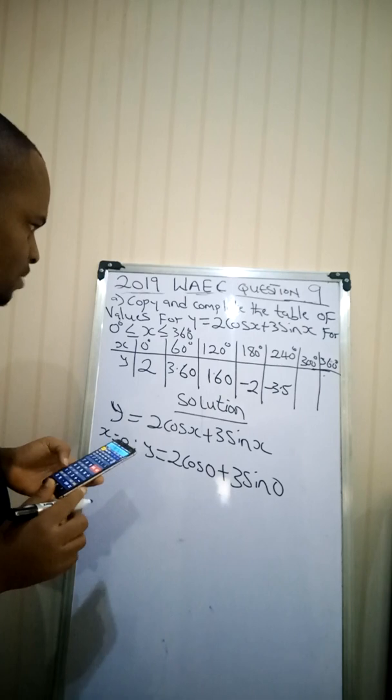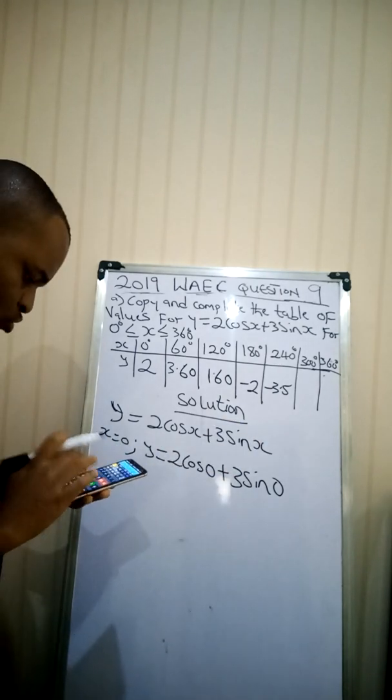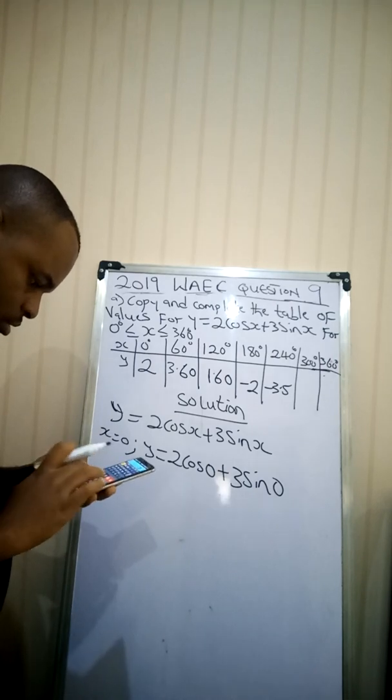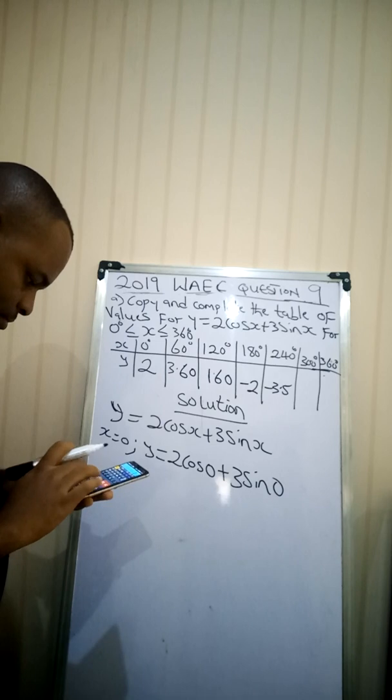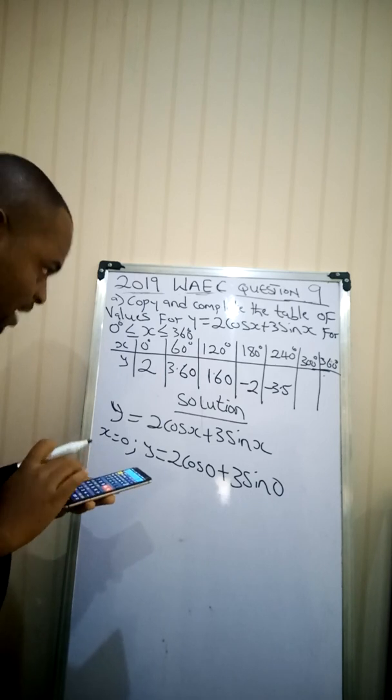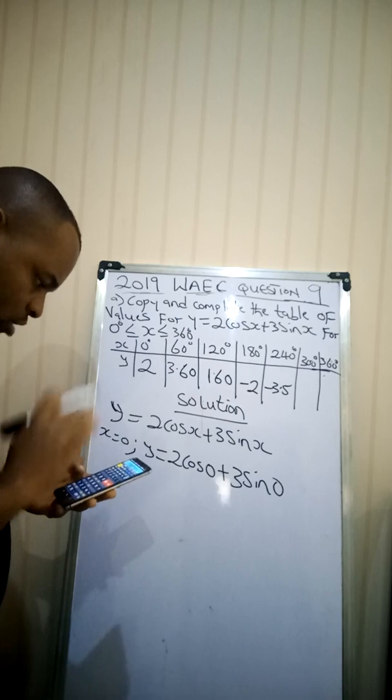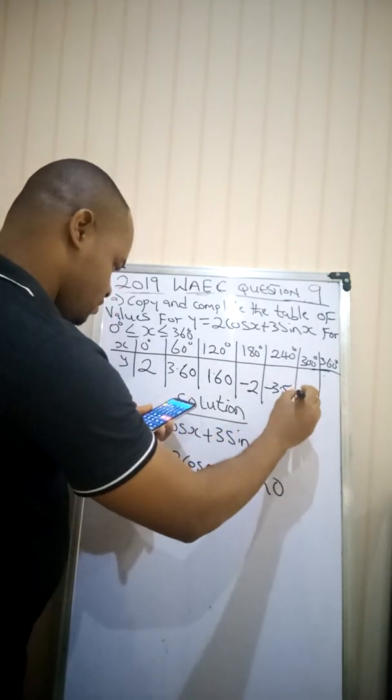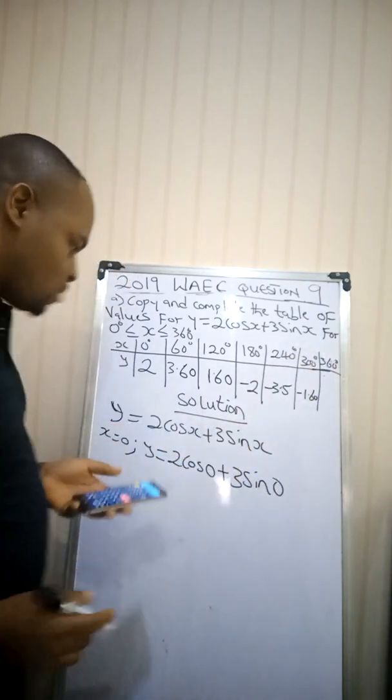Then the next one is 300. Put the value of 300 here. I'll be having 2 multiplied by cos(300) plus, open a bracket, 3 multiplied by sin(300). Close the brackets. Equal to. I'm having this as negative 1 decimal 6.